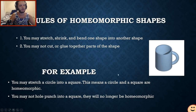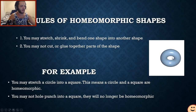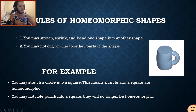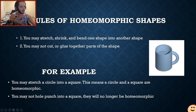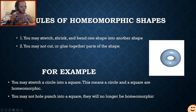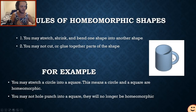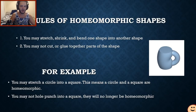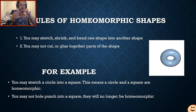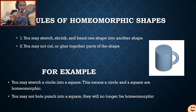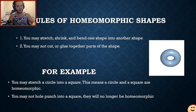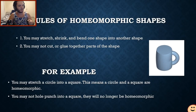However, you are not allowed to cut or glue together parts of the same shape. For example, this mug has a hole in it, and homeomorphically it is the same as a donut — if you stretch and contort it without cutting or gluing, it becomes the same shape as a torus. For example, you could stretch a circle into a square, making them homeomorphic, but you are not allowed to punch a hole into a square because that changes the properties of the shape.